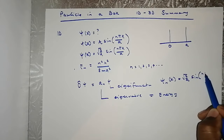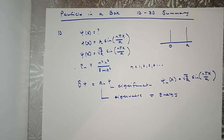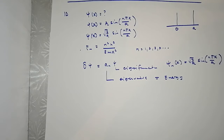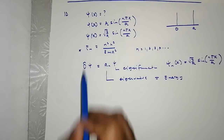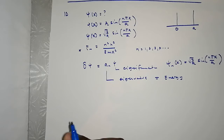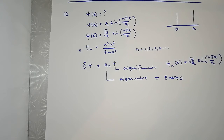The eigenfunction is sin(nπx/a). This is how we got the energy. One important thing to note is that this energy can only have discrete values — it is quantized — and the lowest possible energy of this particle can never be zero. So we'll be talking about zero-point energy.